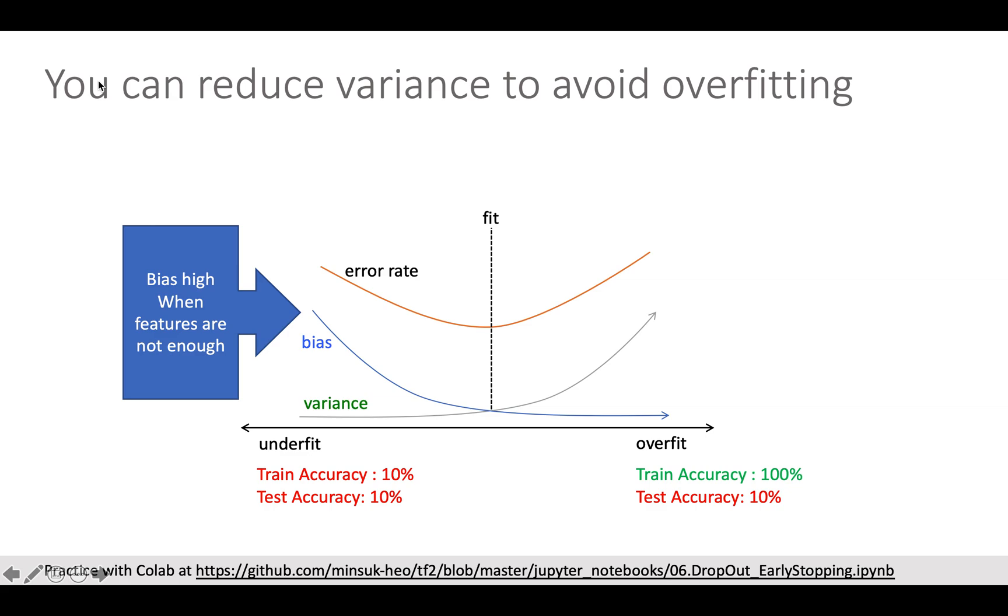Underfitting normally happens when you don't have enough features in your data or you don't have enough data for training. Therefore, normally when your model is underfitting, the training accuracy and test accuracy both are low.